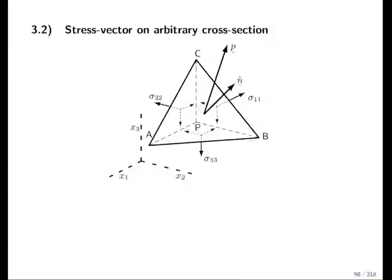And transition to subsection 3.2. Subsection 3.2 is now the stress vector on an arbitrary cross section. I was mentioning this before but actually I was choosing the three Cartesian directions. So now the question is what is the stress vector if you choose any of the other directions?